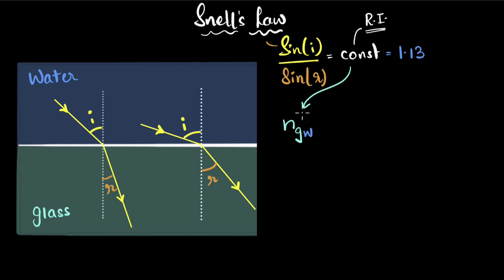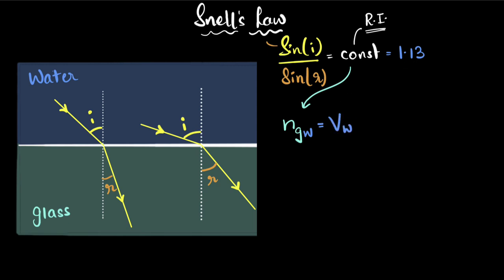But what decides this number? Why is it equal to 1.13? Well, refraction happens due to the change in the speed of light. The speed of light is different in water than in glass, and that change is the reason why light bends. The refractive index turns out to be the ratio of the speed of light in the two media — in this case, the speed of light in water divided by the speed of light in glass.